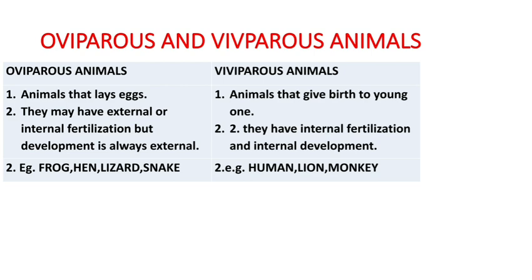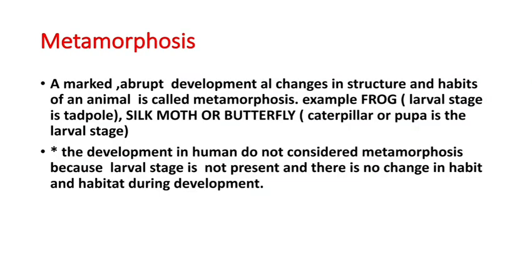Viviparous animals directly produce young ones, so they always have internal fertilization and internal development. Examples of oviparous animals: frog, hen, lizard, snake. Examples of viviparous animals: human beings, lion, monkey.